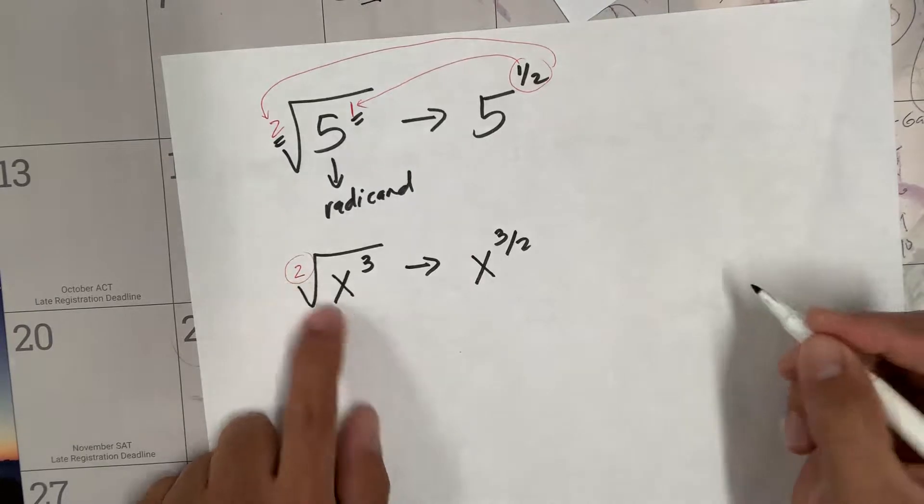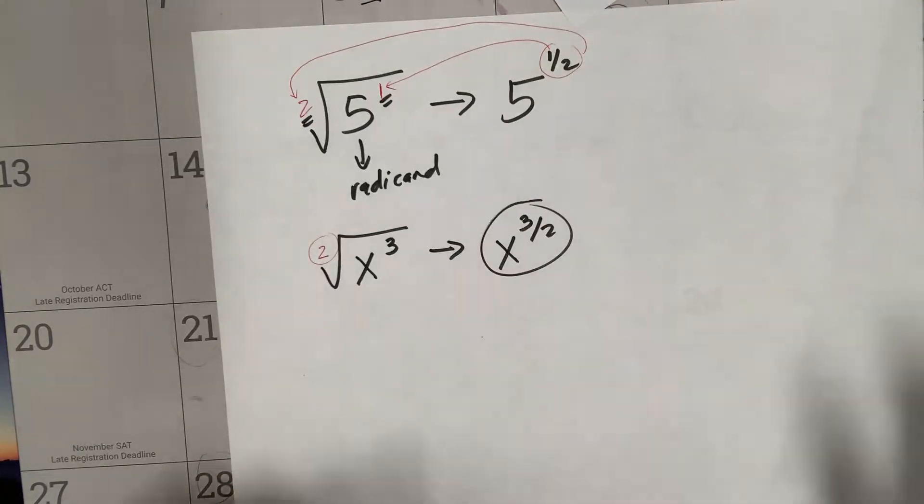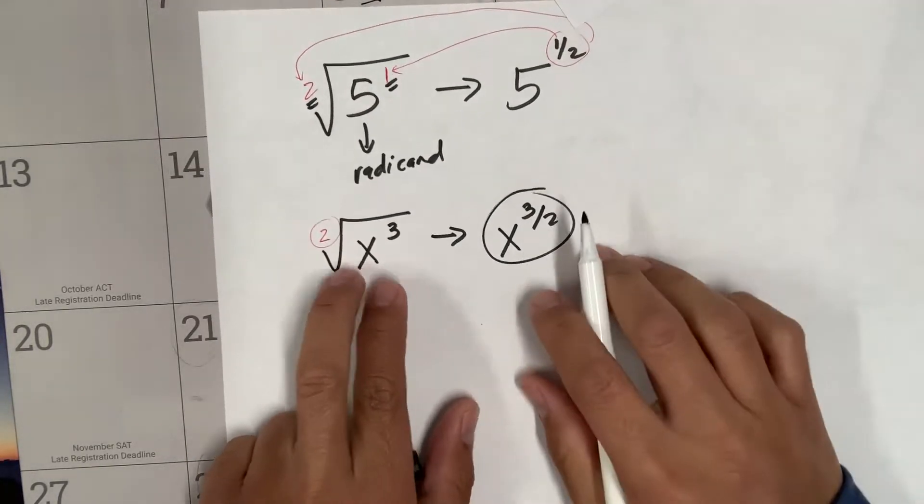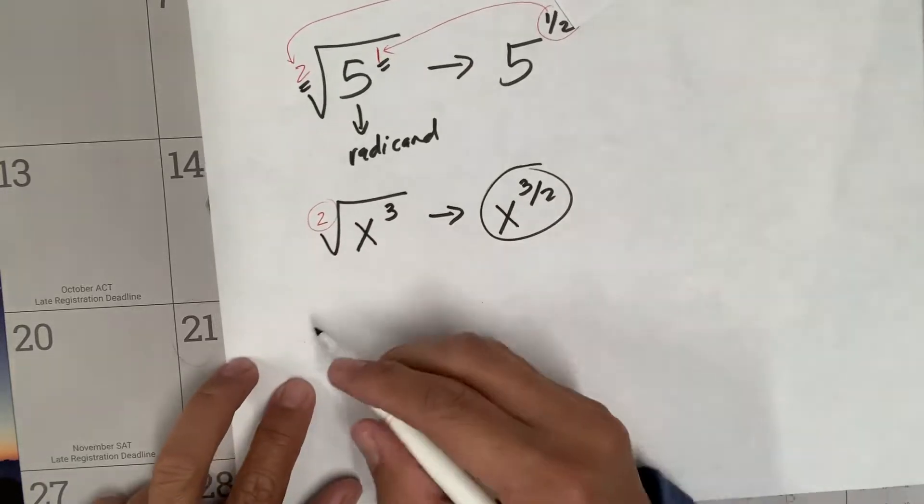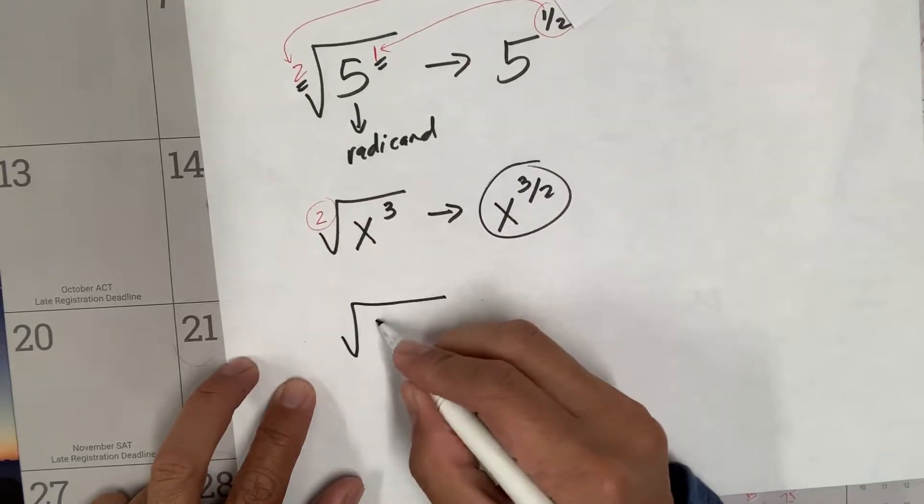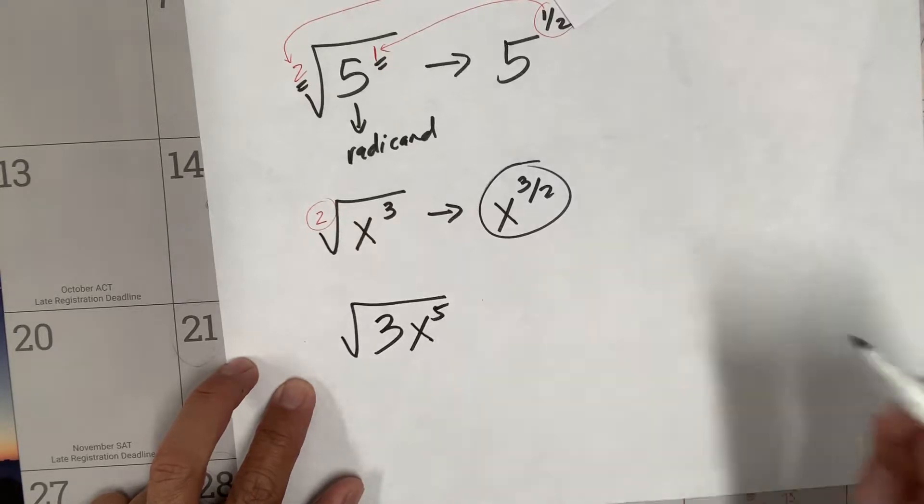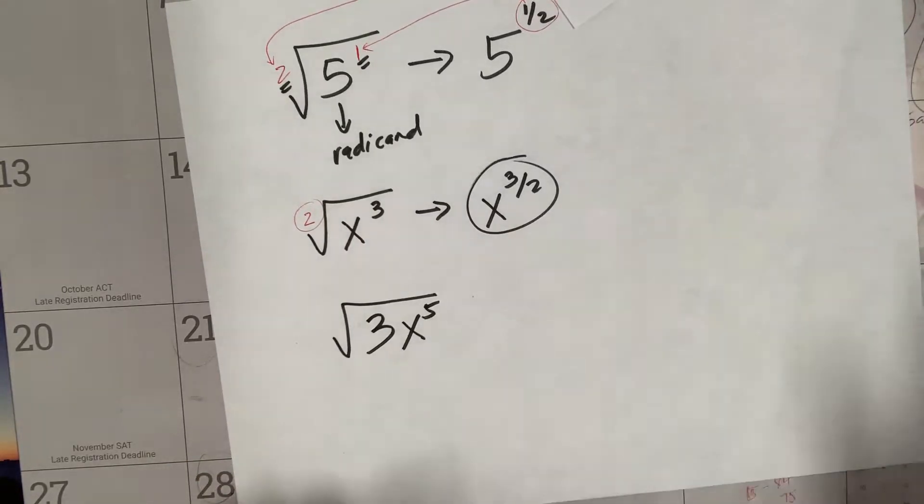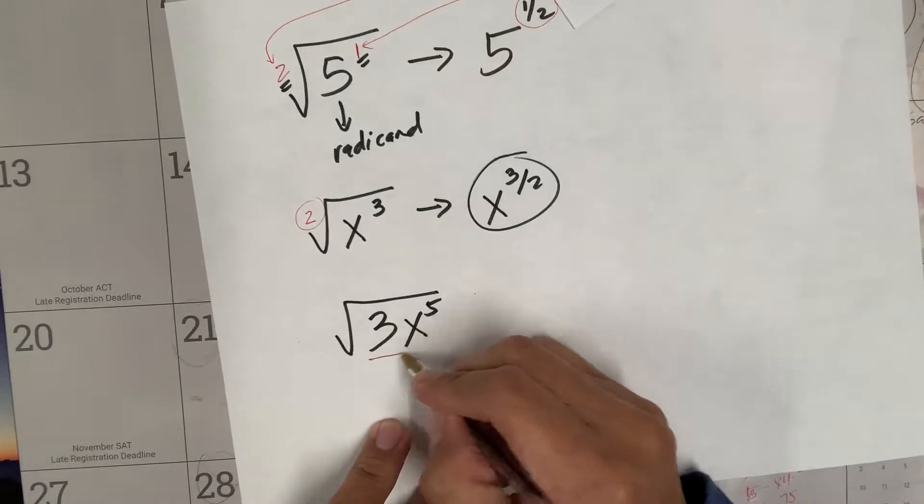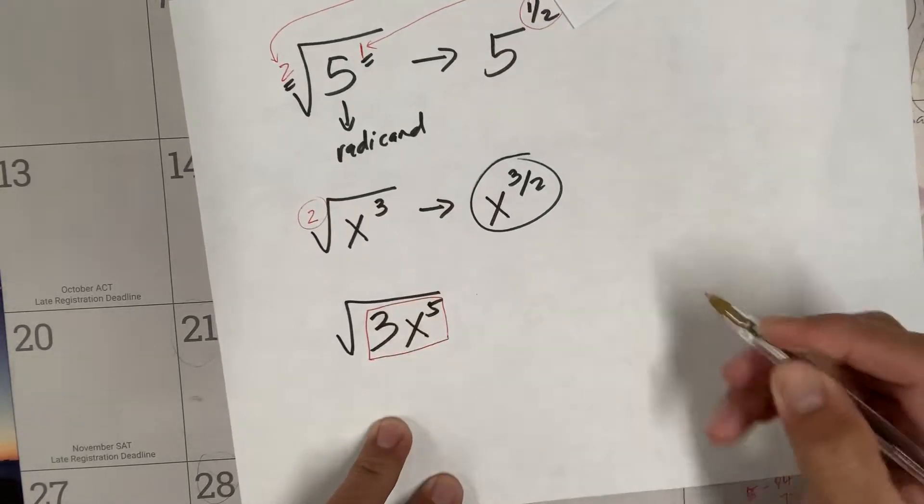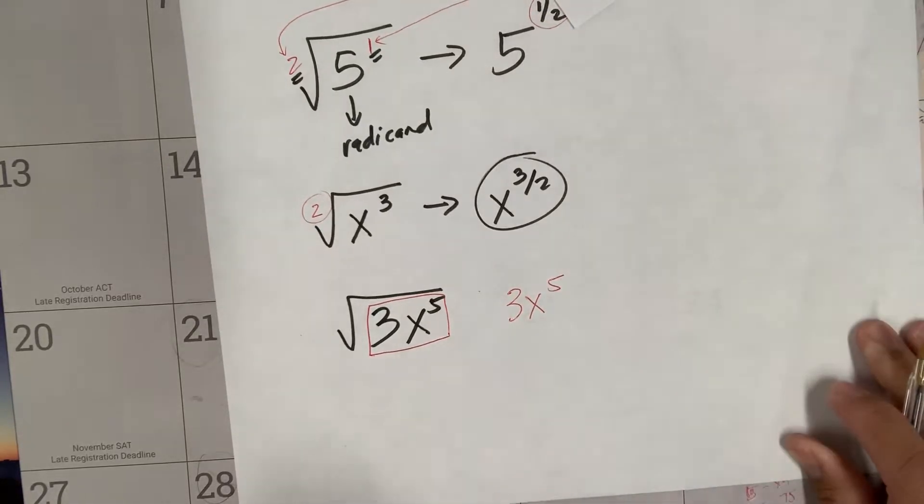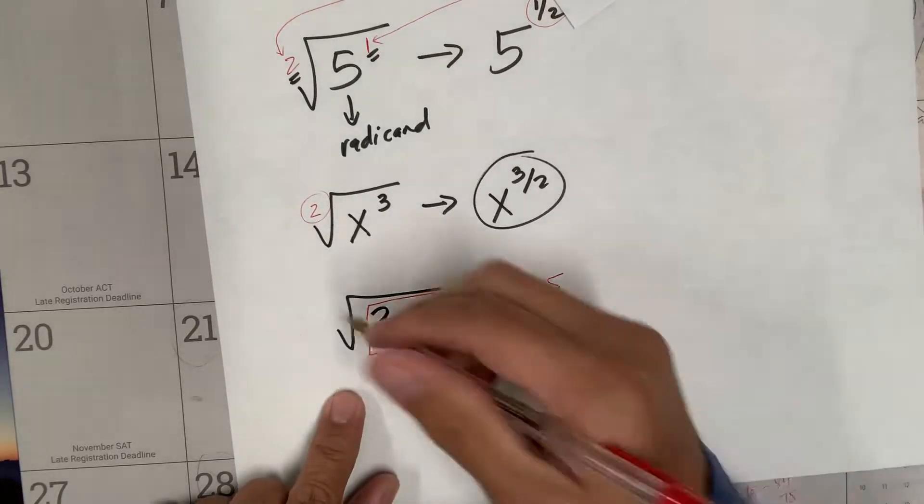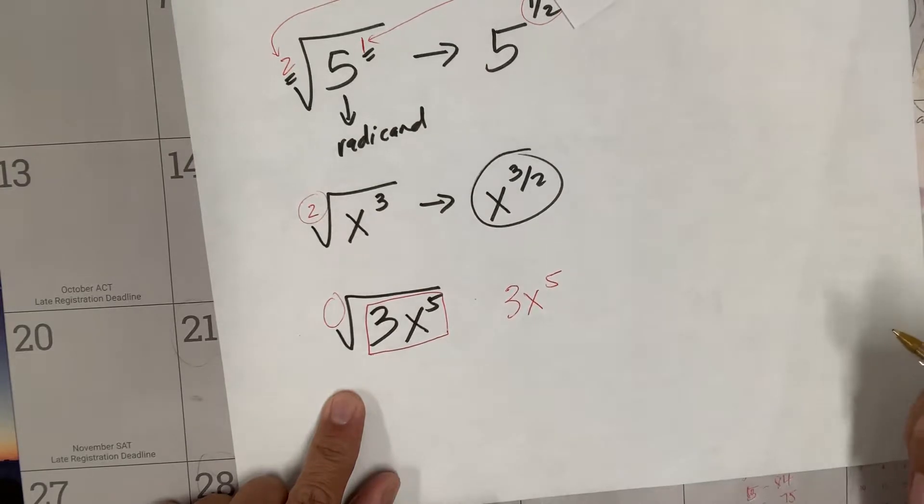What if we have more than one coefficient, or there's a coefficient with the x here? Sample: square root of 3x to the fifth power. This will be a little tricky now because this is our radicand. This will basically be the base there.